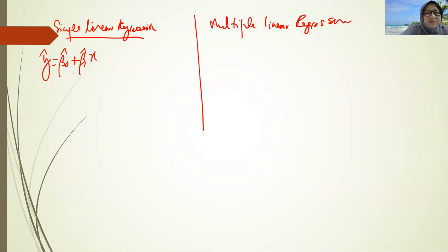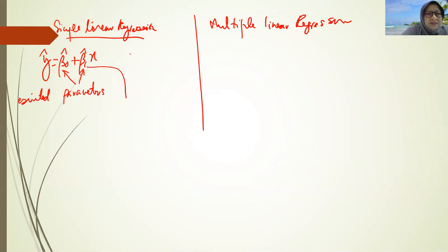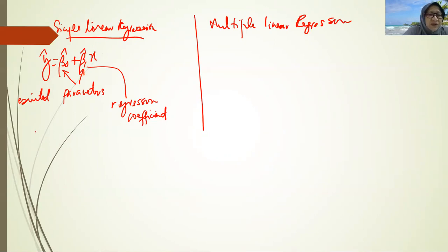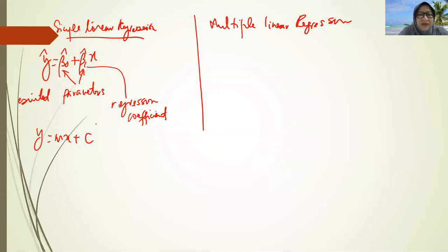So this is simple linear regression. Beta-naught and beta-one are the parameters — the estimated parameters, considered as the regression coefficients. Beta-naught is the intercept. You can compare this with y equal to mx plus c — the concept is the same. Instead of m, we have beta-one, and instead of c, we have beta-naught, as you have learned before in algebra.